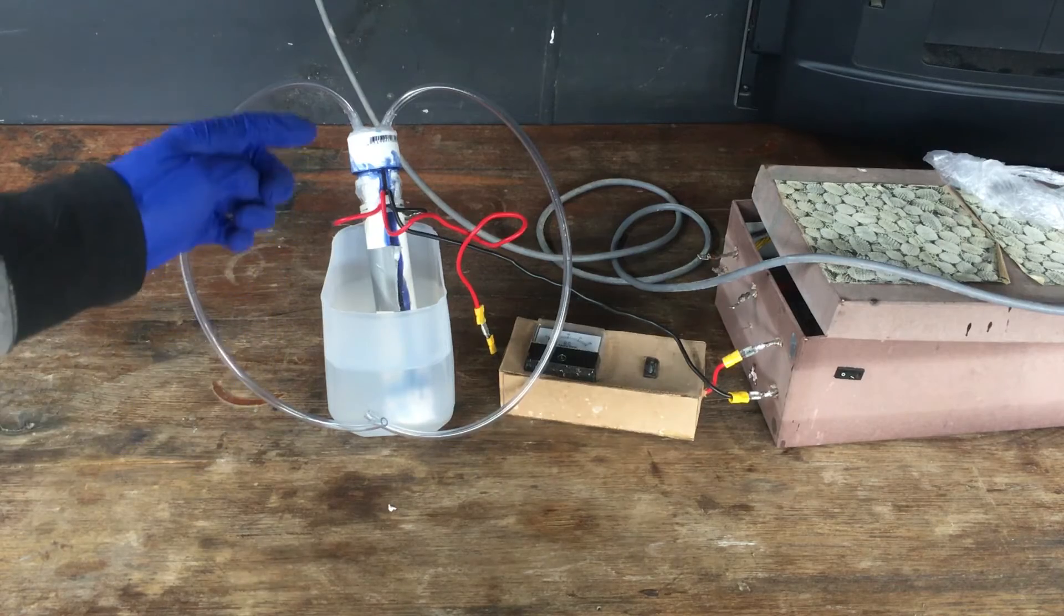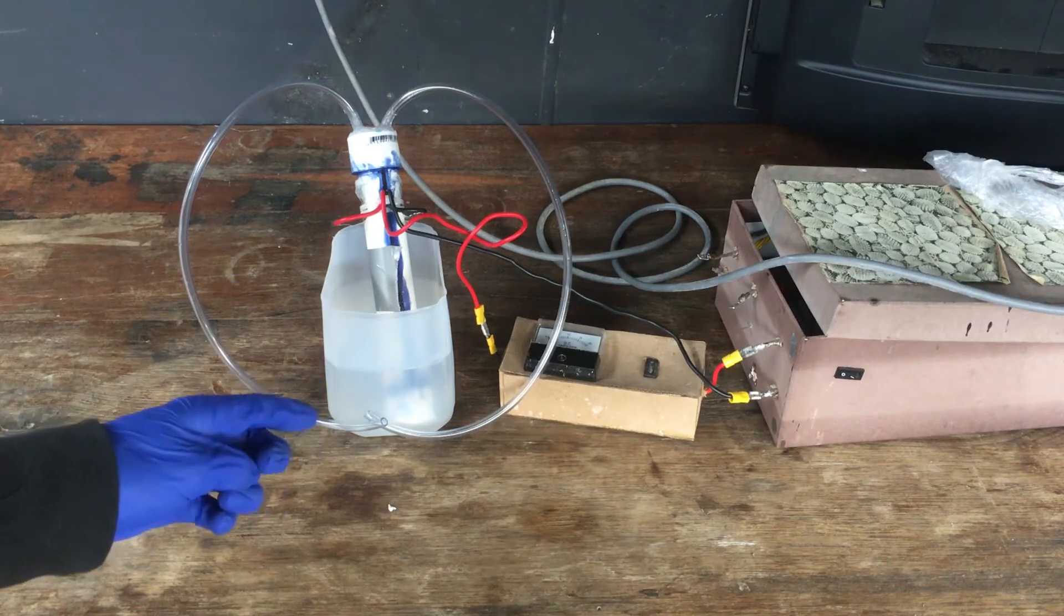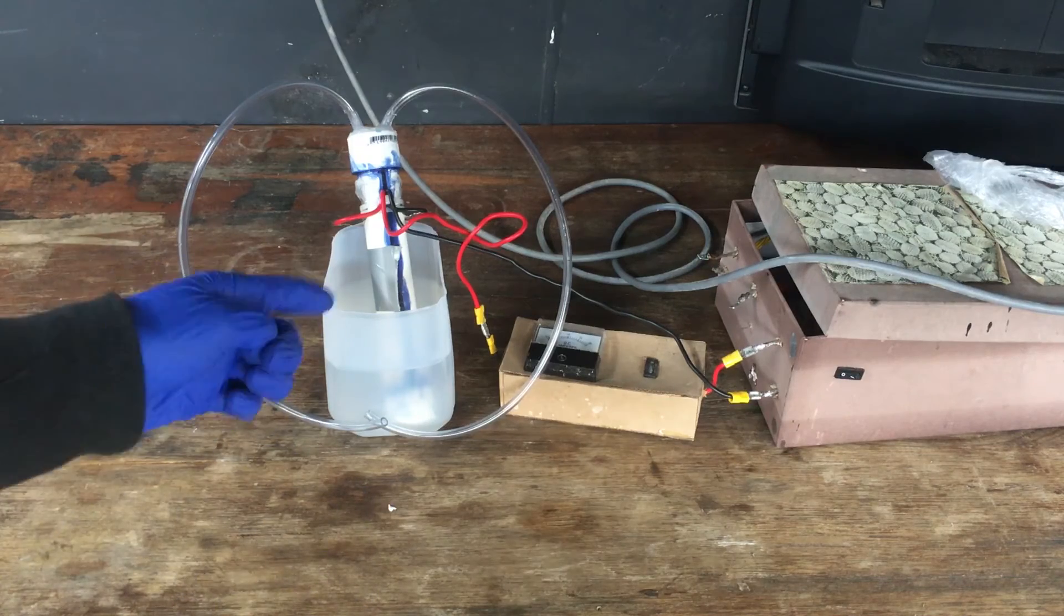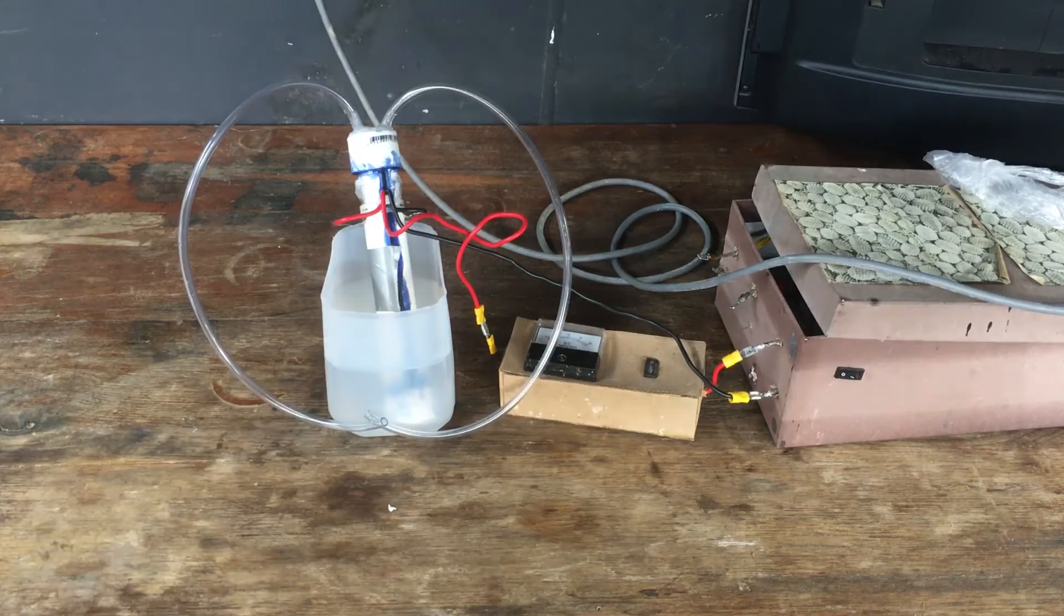When I run this cell in the future, all I'm going to have to do is check up on it periodically, every few hours, and top it up with some distilled water. That'll be especially important if I decide to run it at 5 volts and at that 10 amps that we were seeing initially.